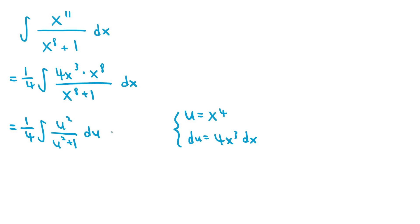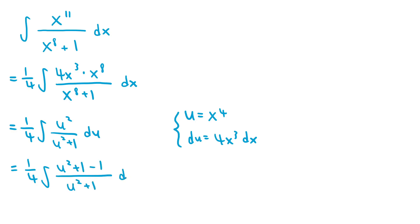One approach is to use polynomial long division, where we divide the numerator as the dividend by the denominator as the divisor, and we would get a quotient and a remainder. The rational function is always equivalent to the quotient plus the remainder divided by the divisor. But instead, I'd like to apply a nice trick, which is just to rewrite the integrand as u squared plus 1 minus 1, all over u squared plus 1.